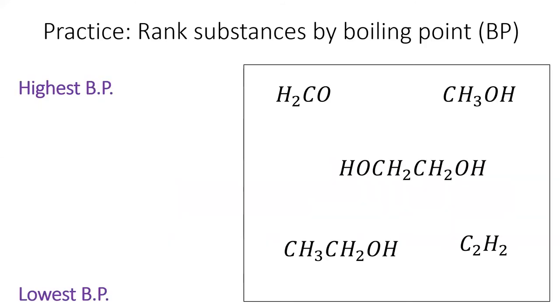As a practice problem, suppose you have pure samples of these five substances. Rank the substance with the highest boiling point on top and the lowest boiling point on the bottom.